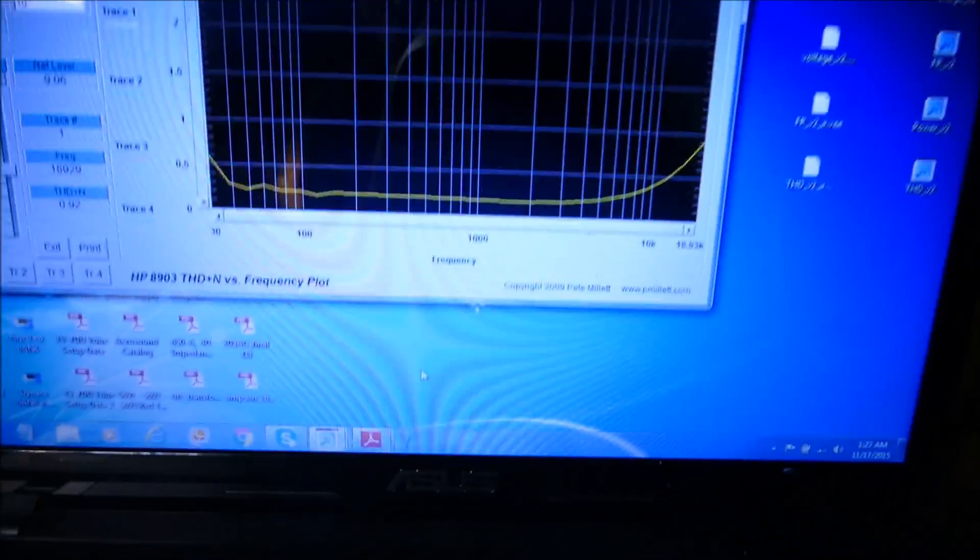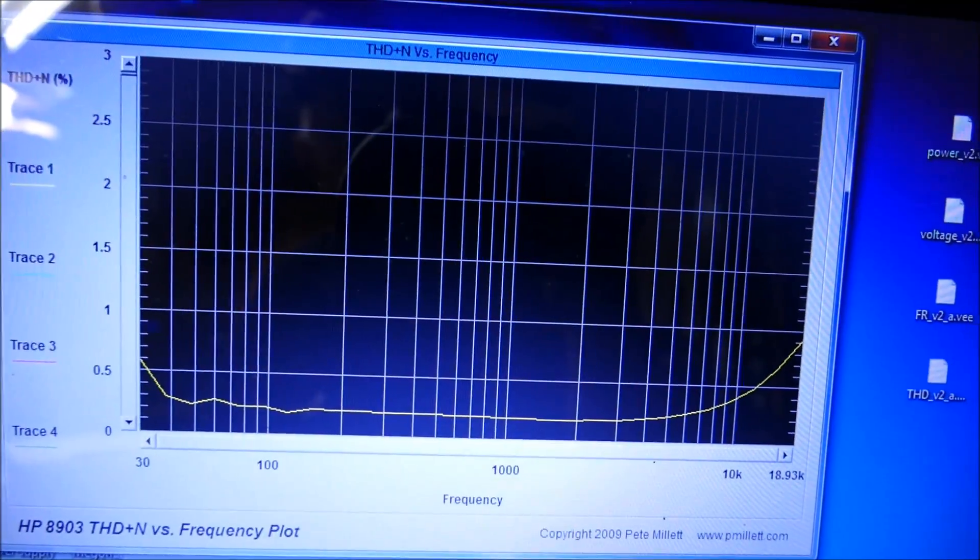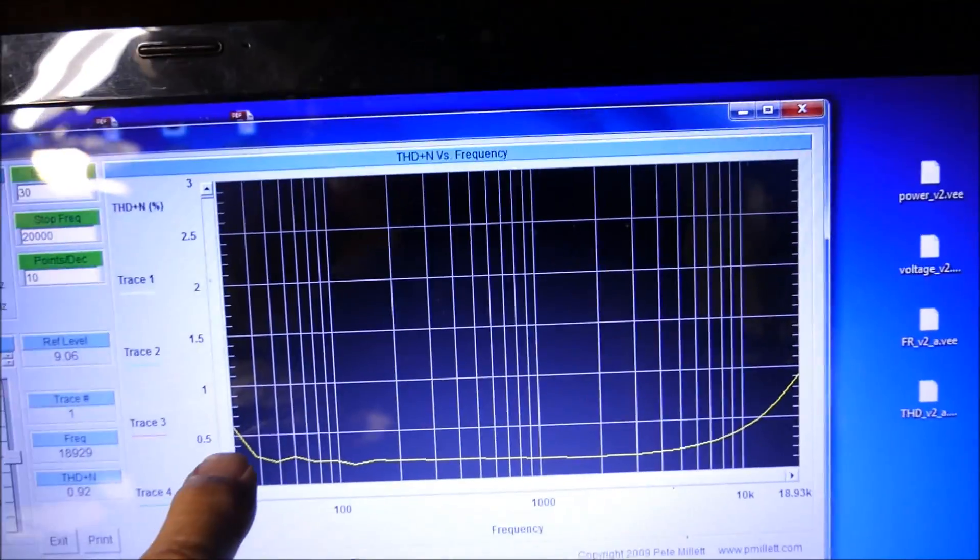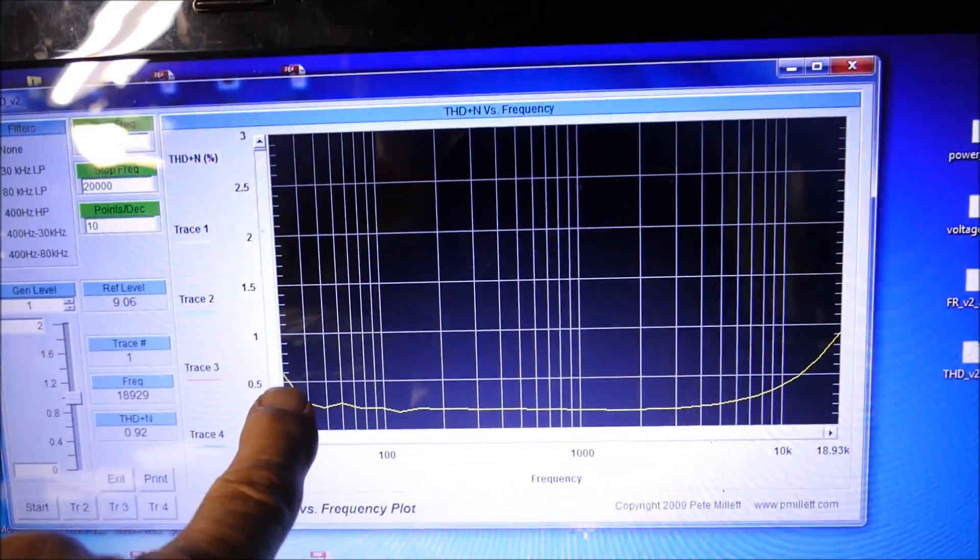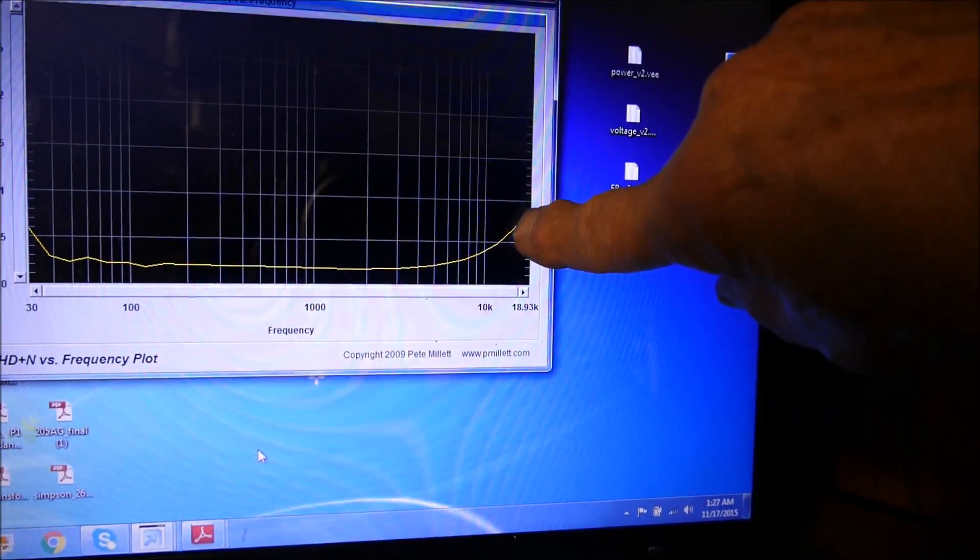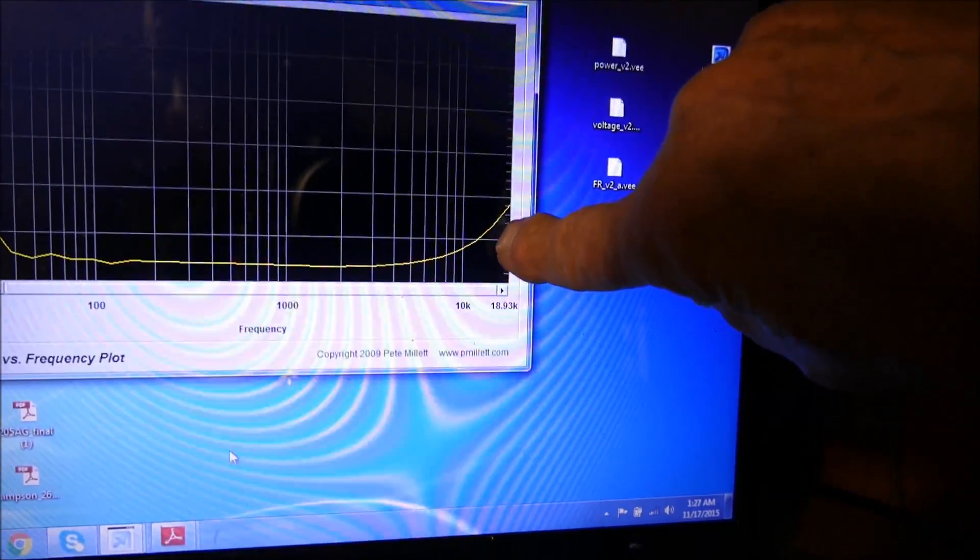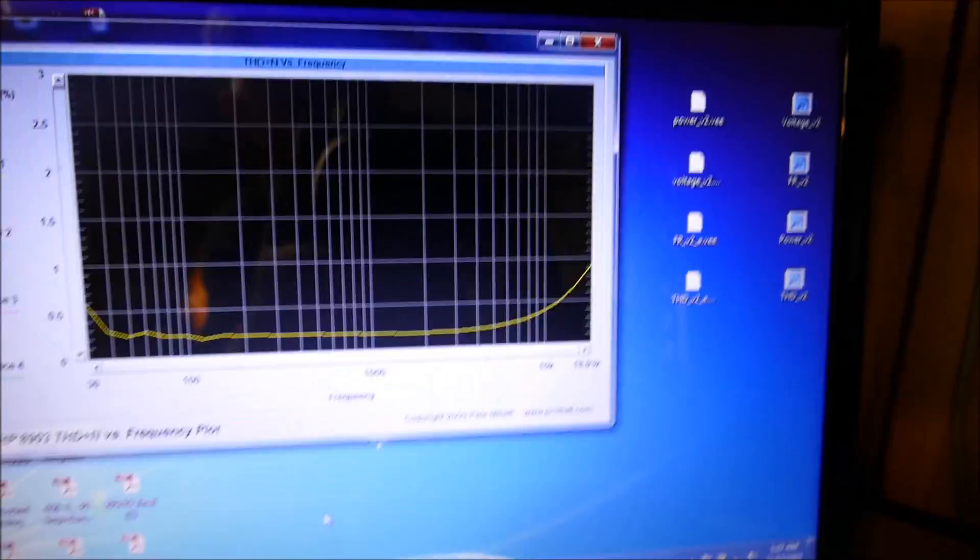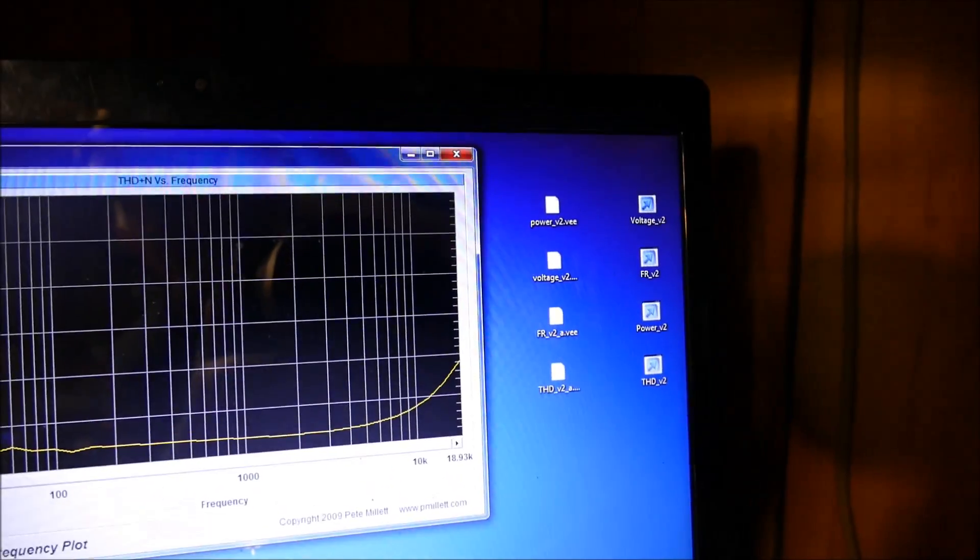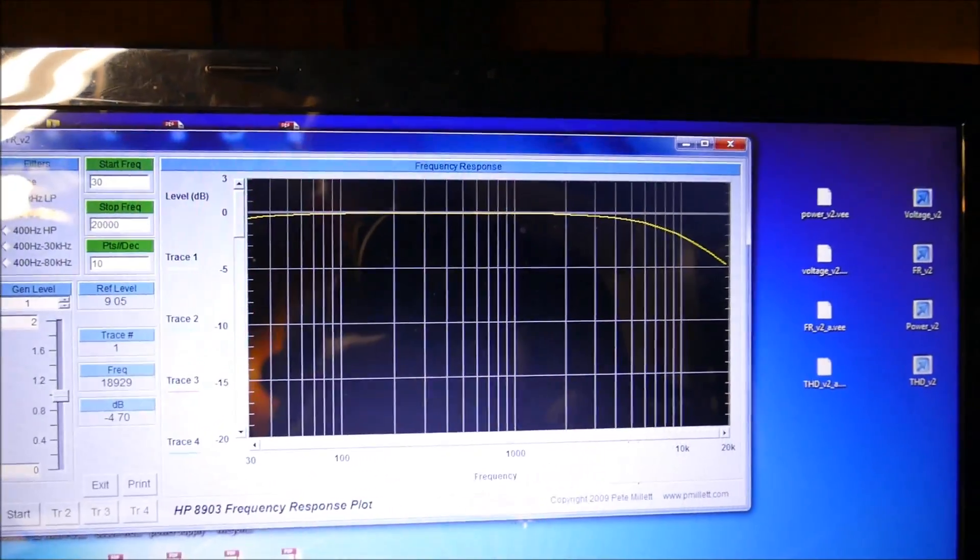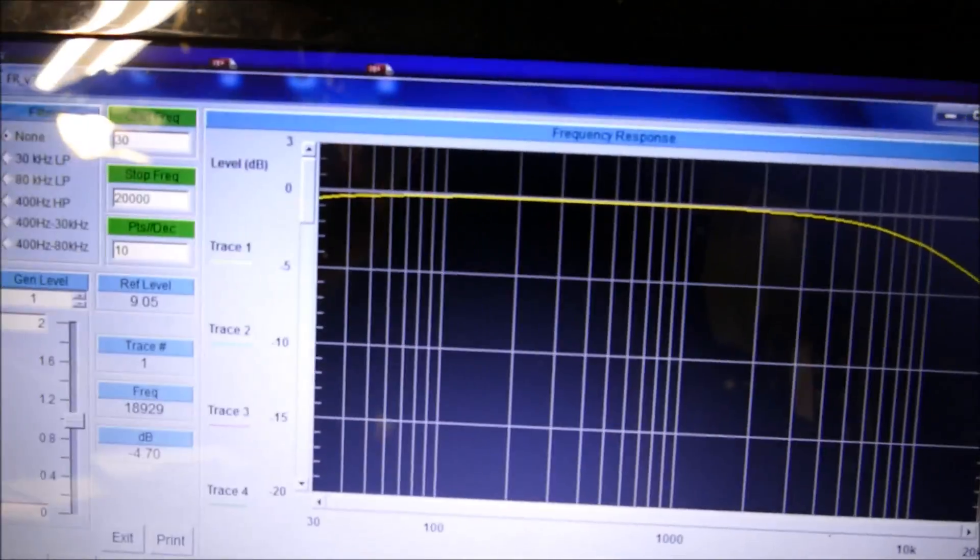Here's the THD. Now this amplifier is not a 20 hertz or 20 kilohertz amplifier. It's a 30 hertz to 15 kilohertz amplifier, and you can see it's about 0.6 at that point right there at 20 hertz. 15 kilohertz is right out here, so it's about 0.6 to 0.7 percent. It's not bad. I listen to it all the time. I like it. And here's the frequency response curve. At 20 hertz you can see it's down about a half a dB.